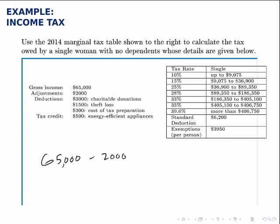For exemptions, these are never listed in the problem statement, but we need to remember what they mean. Each taxpayer gets an exemption for themselves, and then one for each dependent that they have. This woman is a single woman, so she gets an exemption for herself but has no dependents, so she gets one exemption. Notice in the tax table that the exemption amount is $3,950, so we subtract off $3,950. This is a step that's easy to forget, because exemptions are never stated in the problem — each person gets one for themselves and one for each dependent, and you find that amount in the tax table.